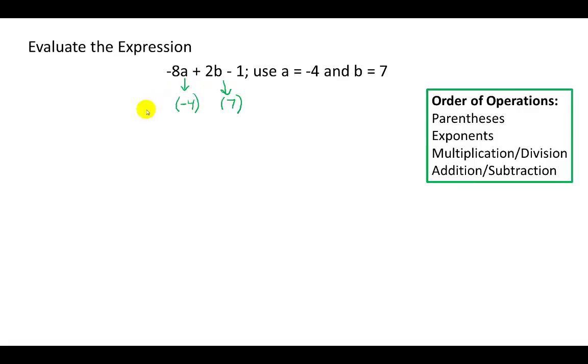I'm going to bring the rest of the expression down, so it was -8 times a, which is now -4, plus 2 times b, which is now 2 times 7, and bring down the -1.